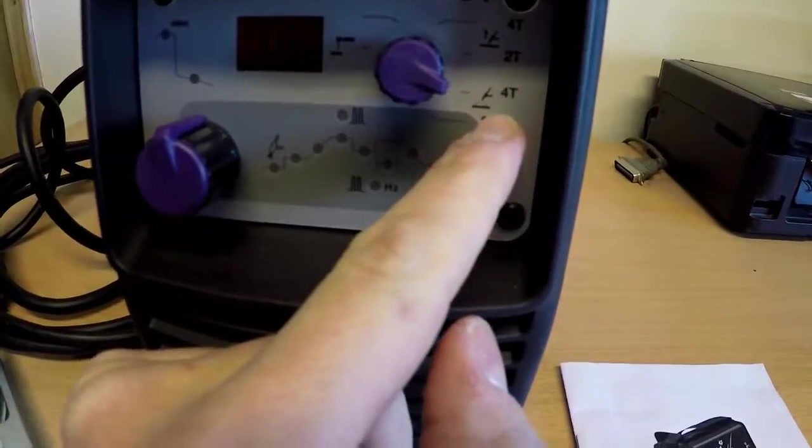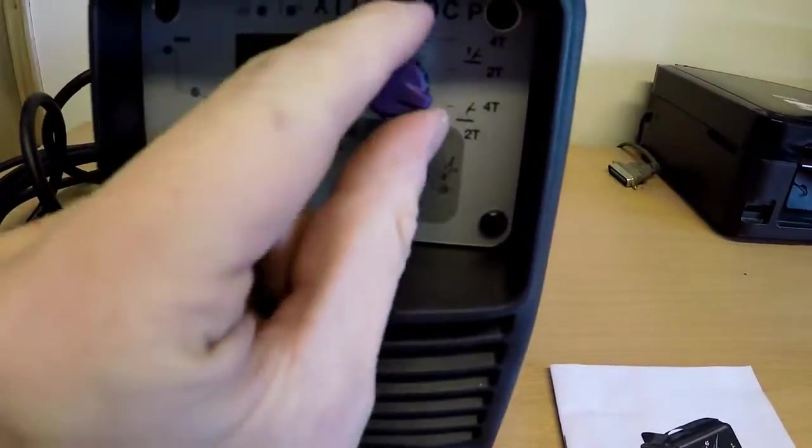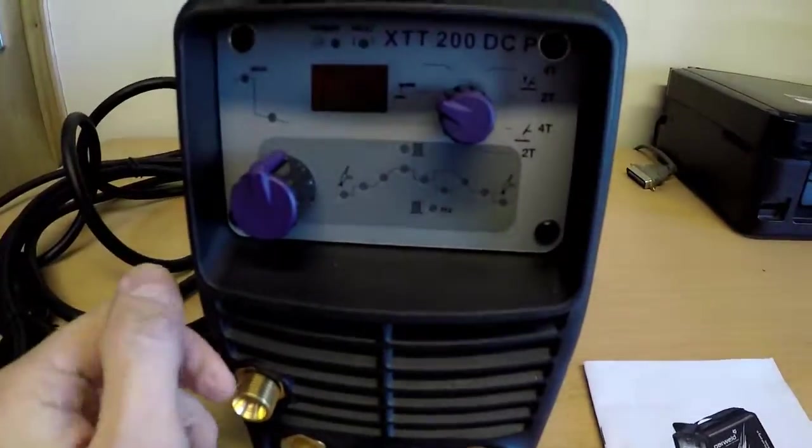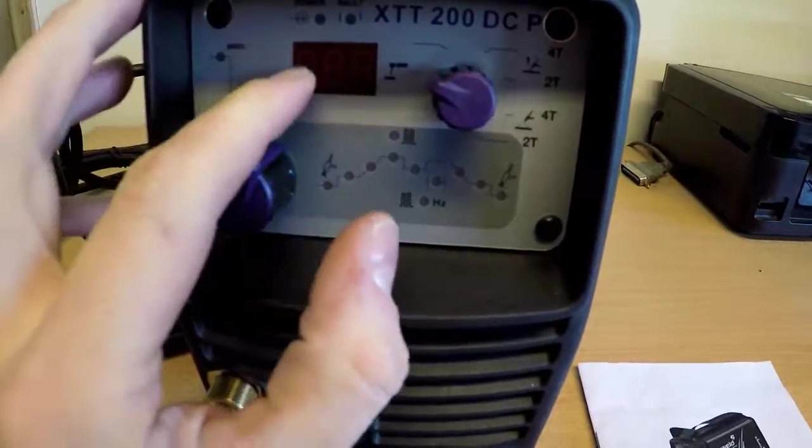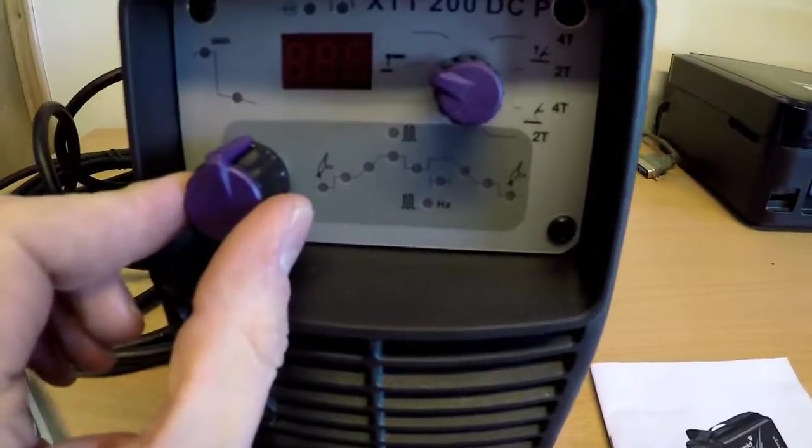So you'll select the mode that you want to do. Now for instance if you wanted to stick weld that's fine, you would select there and then you would use this one to increase or decrease the amps required.